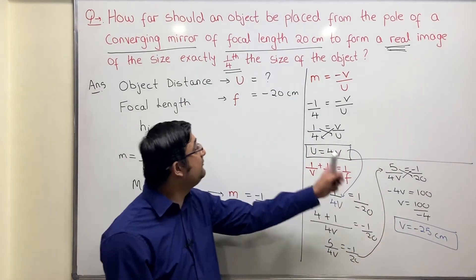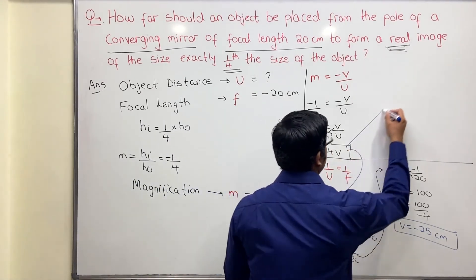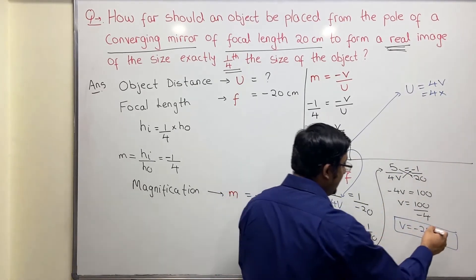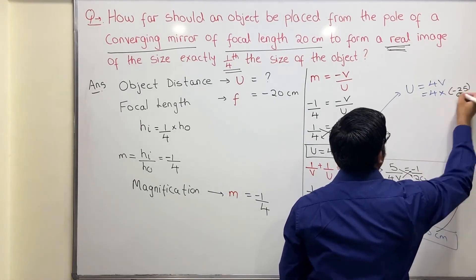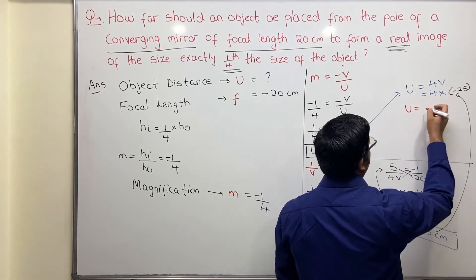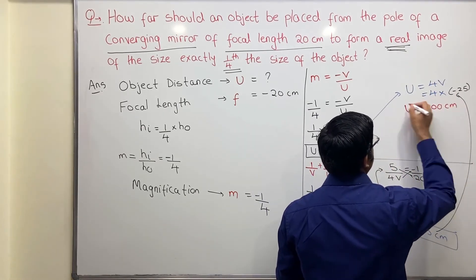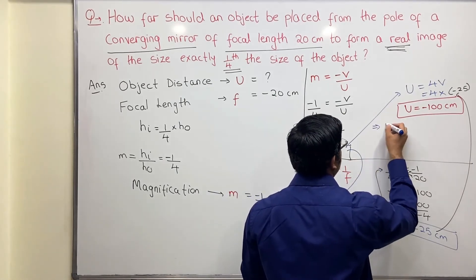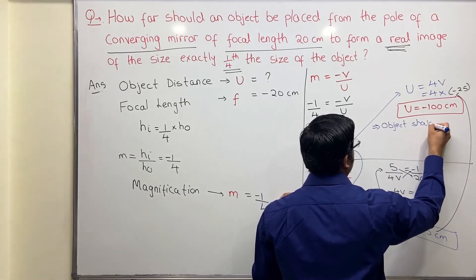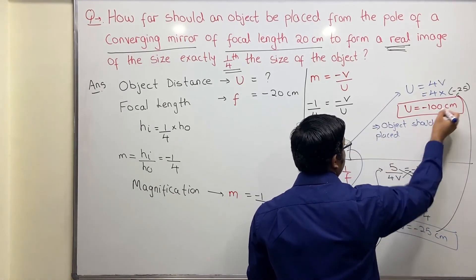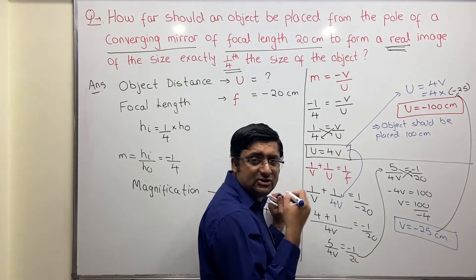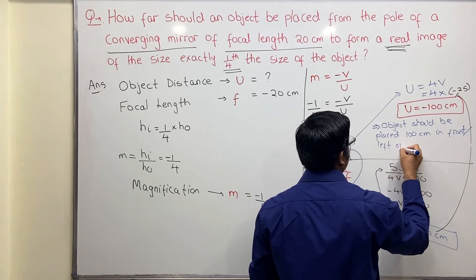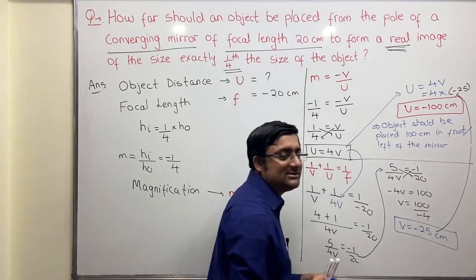We have v = minus 25 centimeter. What do we have to find? We have to find u. Since u = 4v, u = 4 × (minus 25) = minus 100 centimeter. So the object should be placed 100 centimeter in front of the mirror — that is, to the left of the mirror.